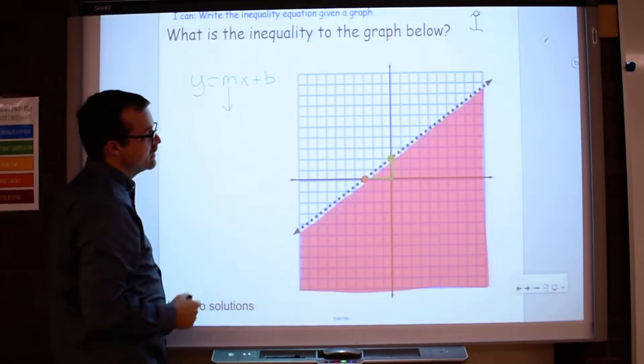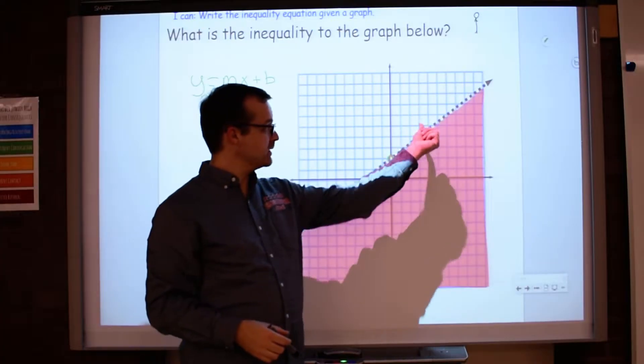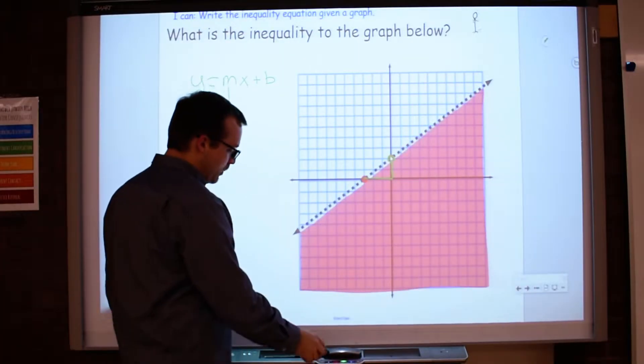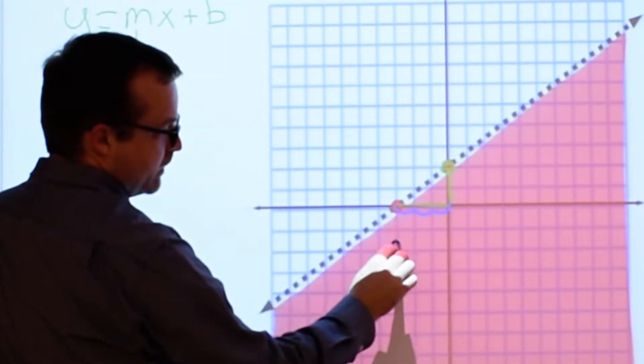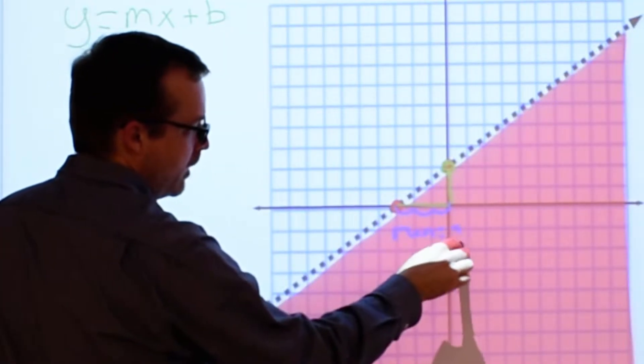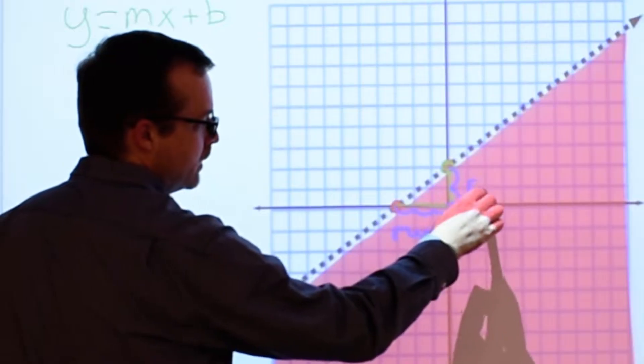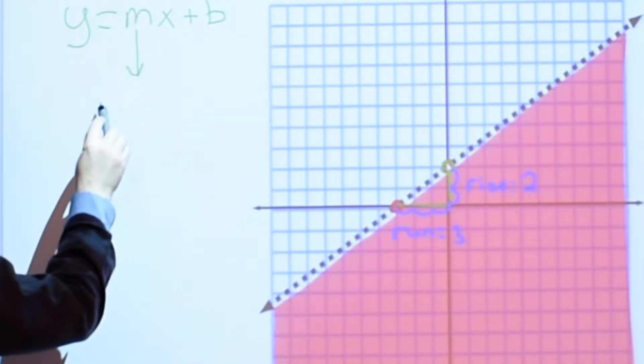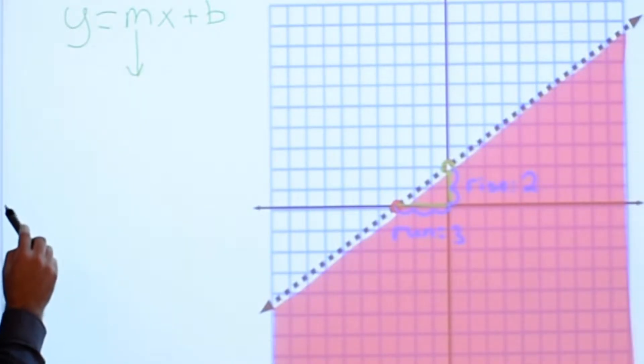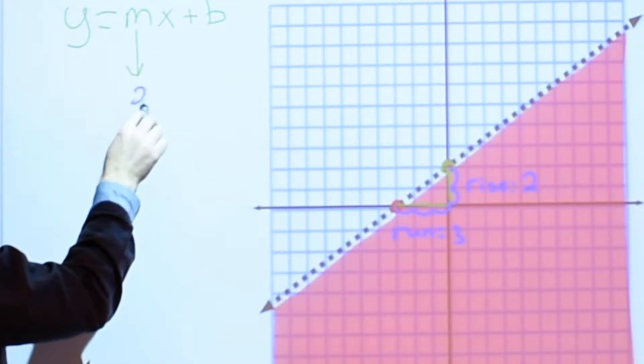Let's talk about the slope here first. The slope is positive. That's a good thing to know. Slope has always been rise over run. The run here is 1, 2, 3. The rise is 1, 2, like so. So our slope then is going to be rise over run, which is going to be 2 over 3.